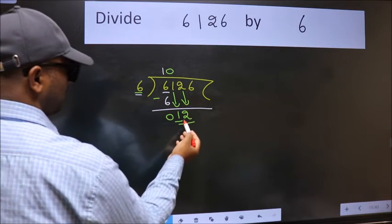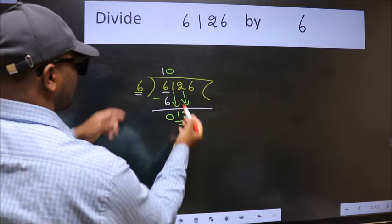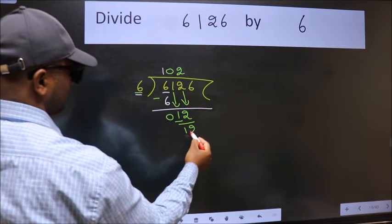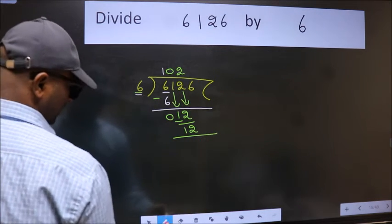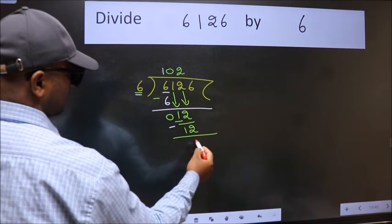So 12. When do we get 12 in the 6 table? 6 twos is 12. Now we subtract and get 0.